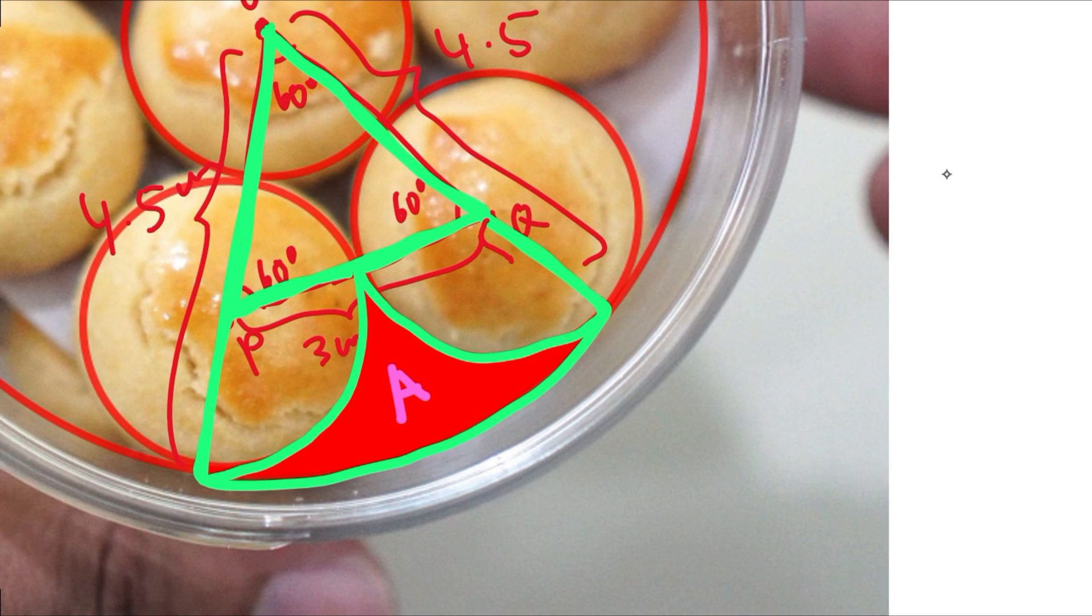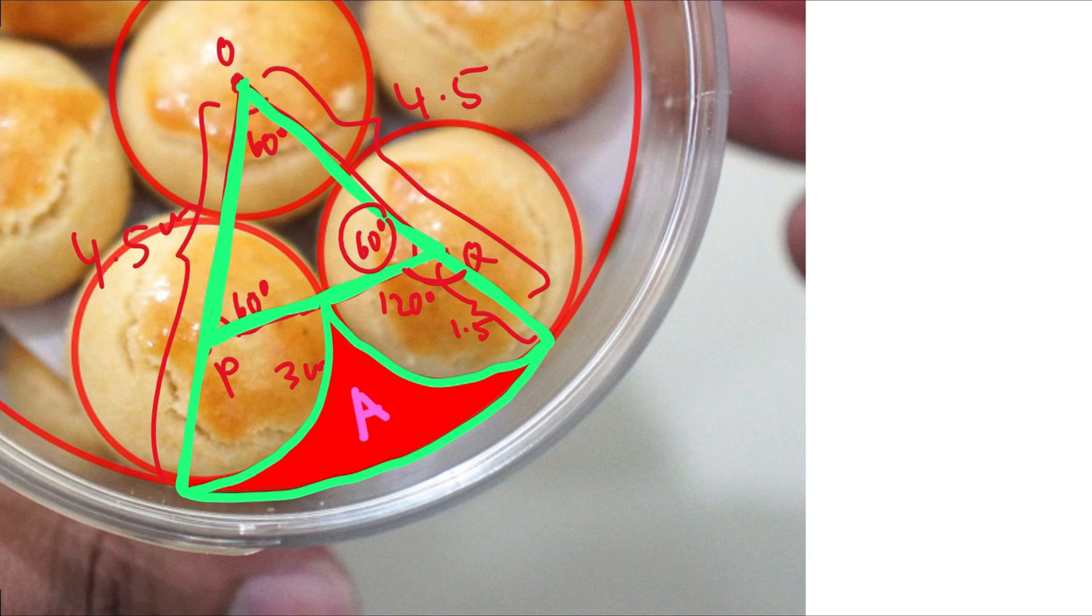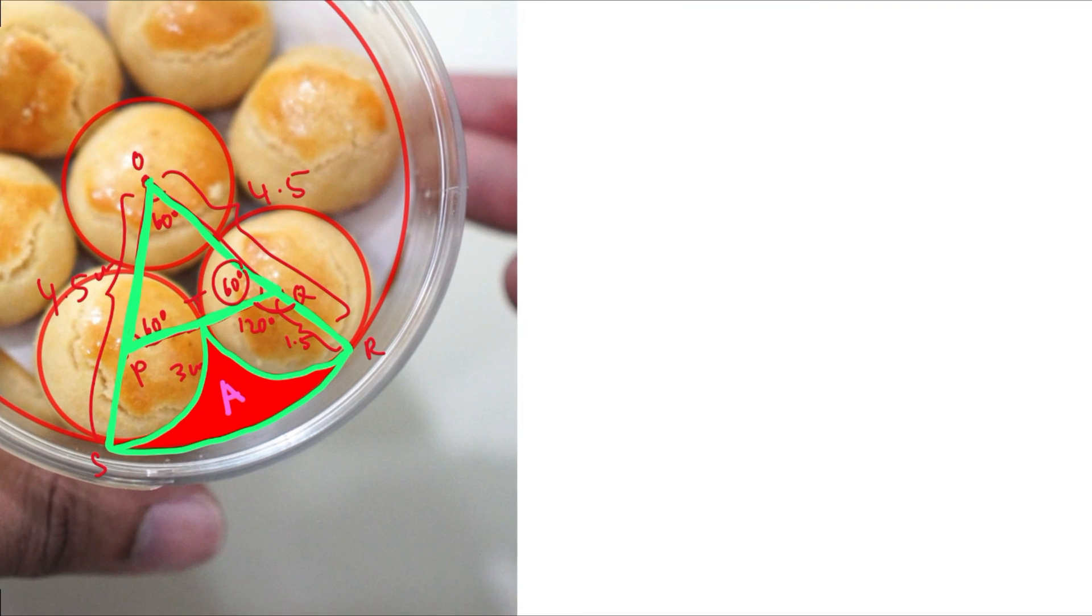So let's figure out the parameters for the sectors. The radius here, this is 1.5 centimeters. And this angle here will be 180 minus 60 because this is a straight line. Therefore, we get 120 degrees. Let's label the vertices. So here we have R, let's call this S and let's call this T.